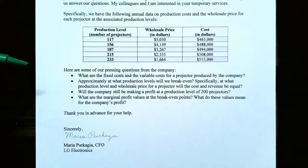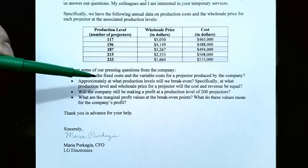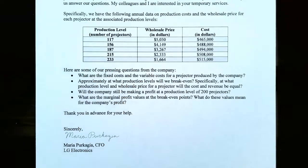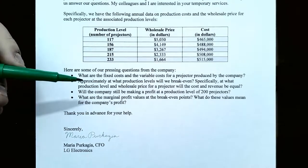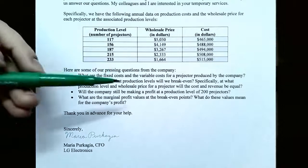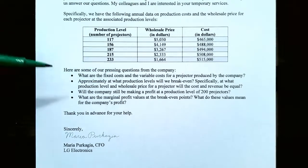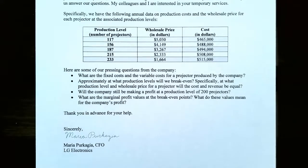The company has some pressing questions. They want to know what is the fixed cost and the variable cost for a projector produced by the company. They want to know approximately at what production level they will break even — specifically at what production level and what wholesale price will the cost and the revenue be equal. Will the company still make a profit at a production level of 200 projectors? And what are the marginal profit values at the break-even points?